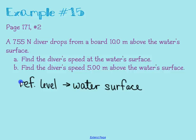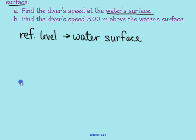Step three is to figure out your points — a point where we know something and a point where we're looking for something. The point where we're looking for something is pretty clear: we're looking for the speed at the water's surface. I also know information about where the diver starts — he starts 10 meters above the water's surface. So those are my two points: the diver's starting point and the water's surface. Next I'll write out a conservation of energy equation, writing all the types of energy he could have before and after.